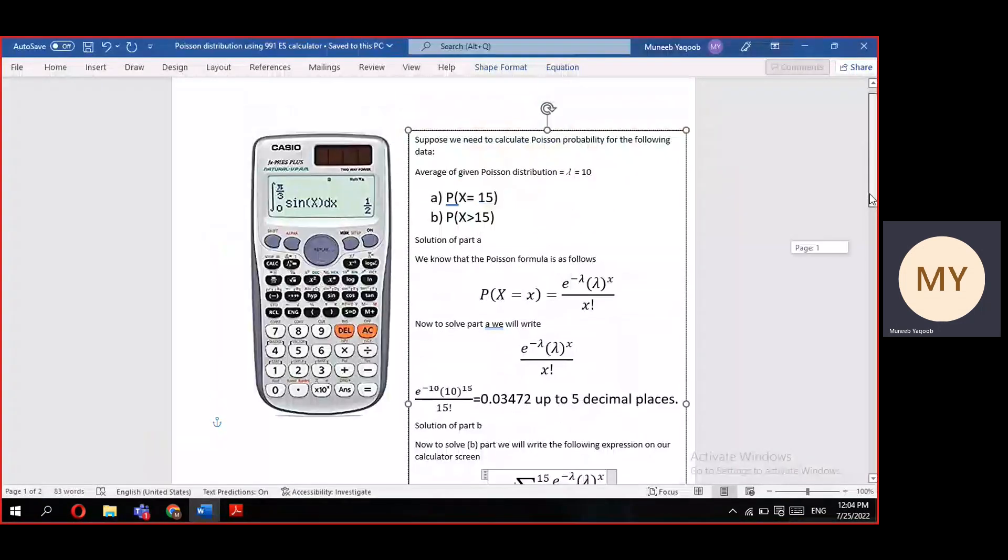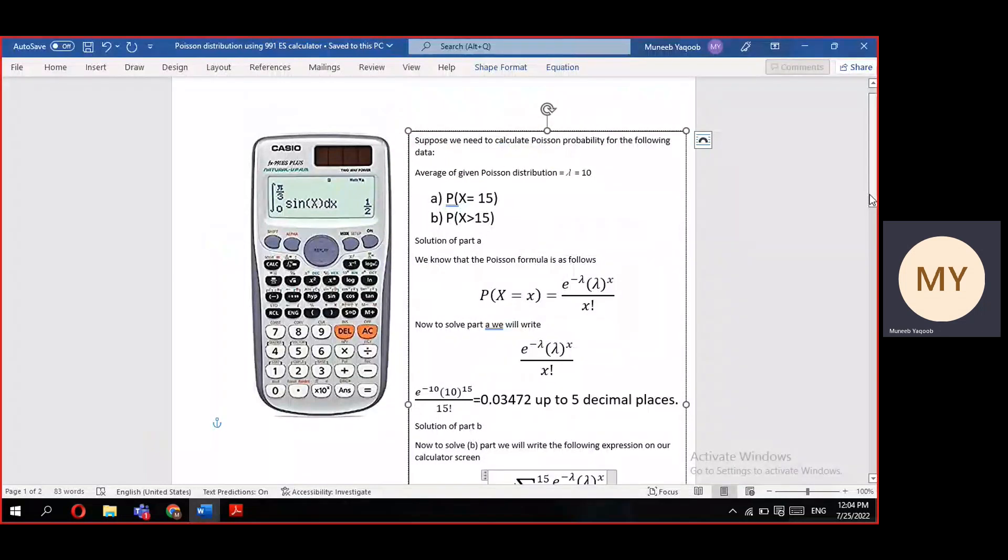Dear students, today we will learn how to use your 991 ES calculator to calculate Poisson probability. Suppose for a given Poisson distribution, the average number represented by lambda equals 10.